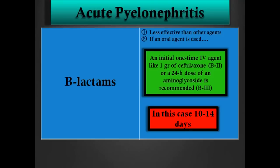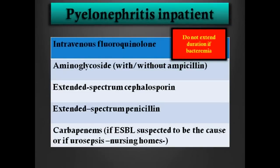Ceftriaxone is totally different because you can give it IV. Sometimes you cannot treat the patient as an outpatient because the patient is severely ill with fever, vomiting, or unable to take pills, so you decide to admit. Of course, you have more options: intravenous fluoroquinolones such as ciprofloxacin or levofloxacin, aminoglycosides — with or without ampicillin if you have positive urine culture for Enterococcus, in which case you need beta-lactam plus aminoglycoside.